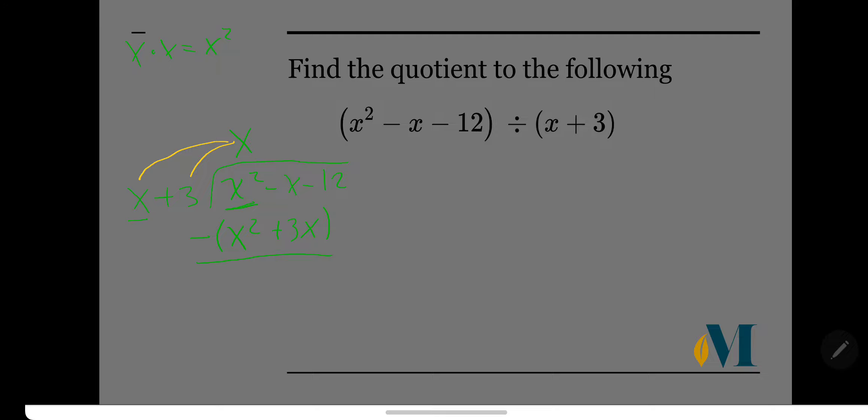Now if we're subtracting, I'm gonna let y'all know that you can turn this to an addition problem if you change the sign of everything in parentheses here. So we can look at this as negative x plus negative 3x, which is negative 4x, and then x squared plus negative x squared. Well, those are opposites of each other, so they're gonna have a zero there.